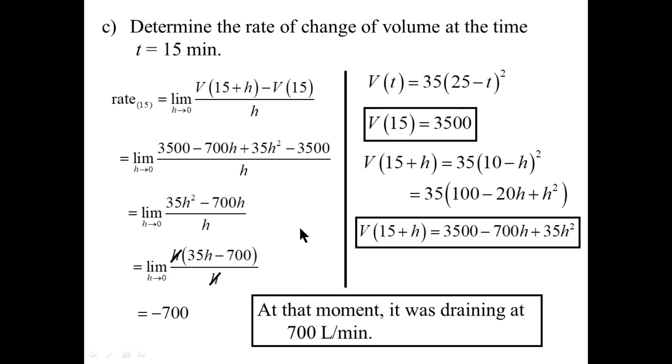So if you recall, the average rate of change of volume during the first 15 minutes was 1,225 liters a minute. But at that instant in time, it was only draining out at 700 liters a minute. So it had slowed down. I guess in the first 15 minutes, there was more oil in the tank. So there was more pressure in the pipe. So it would drain faster. But it's slowing down a little bit at T equals 15 minutes.